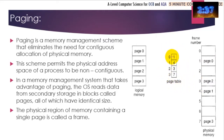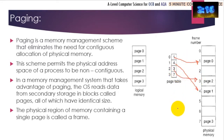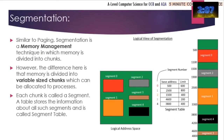The page table knows that in order to access frame zero we need to go there, and in order to access the next set of code — page zero — we need to go to frame four, and then page two goes to frame three. RAM is just filled up as and when it's required, and so a page table is used to ensure that all the different parts of the program can be accessed whenever needed.